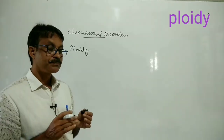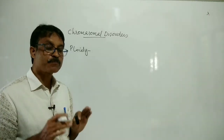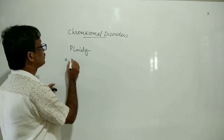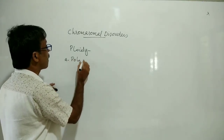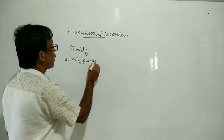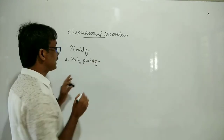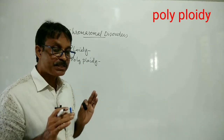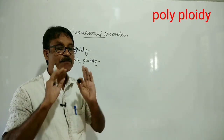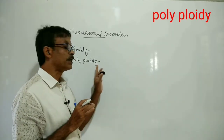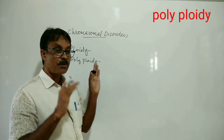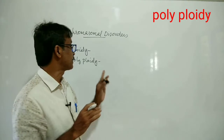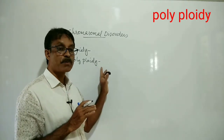There are two types of ploidy. One is called polyploidy. A change in the whole set of chromosomes is called polyploidy.